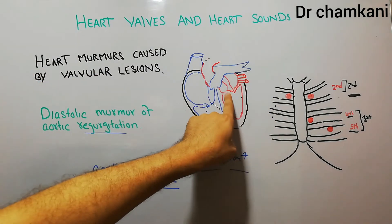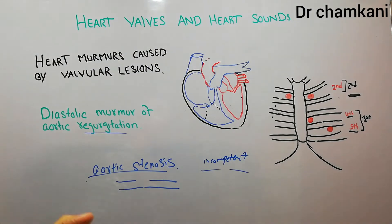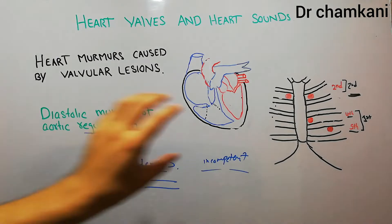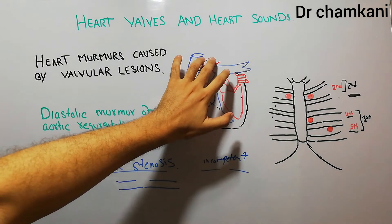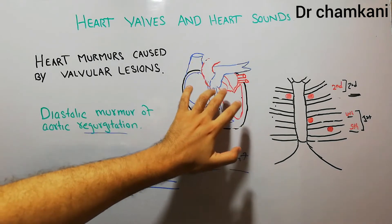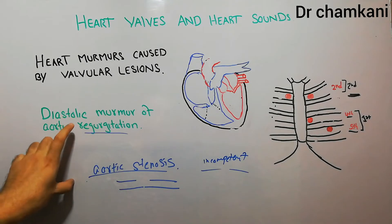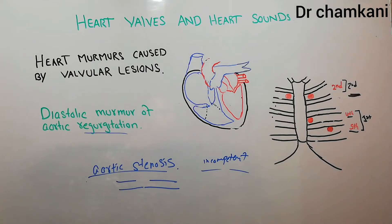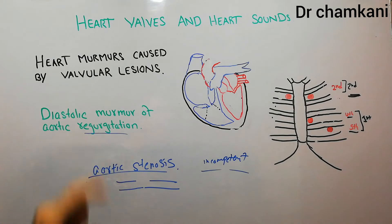So normally this aortic valve should allow blood to move from the left ventricle into the aorta, but it will not allow blood from the aorta to come back into the left ventricle. When the valve becomes incompetent, it allows blood to move from the high pressure aorta into the low pressure left ventricle during diastole. The murmur produced due to incompetence of the aortic valve is called diastolic murmur of aortic regurgitation.